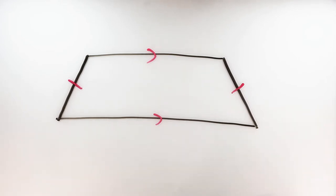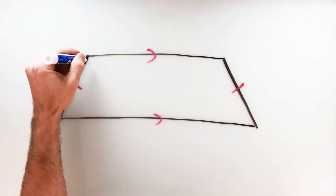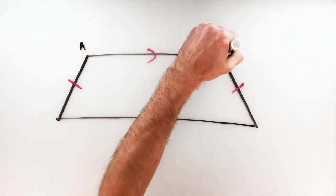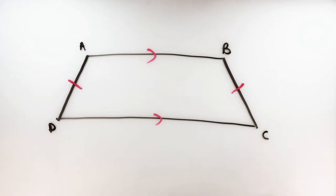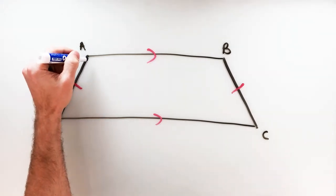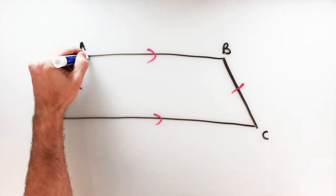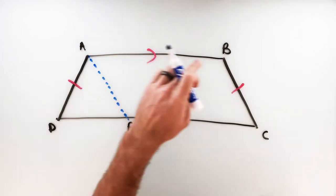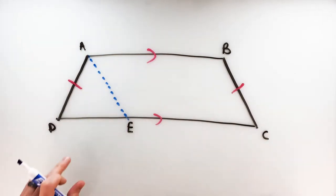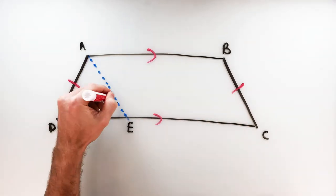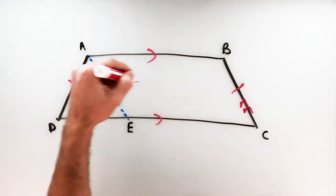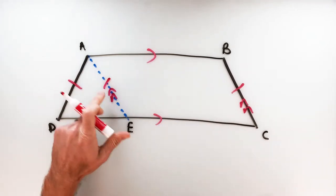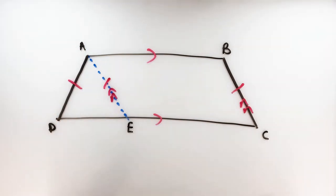To prove the base angles are congruent, we're going to draw an auxiliary line. Let's put some points: A, B, C, and D. We're going to draw a line parallel to BC starting at A, coming down to a new point E. Point E creates a parallelogram — A, B, C, E — and a triangle. We know that parallelograms have opposite sides that are congruent, so AE is congruent to BC. Notice that AE is also congruent to AD, making this an isosceles triangle.